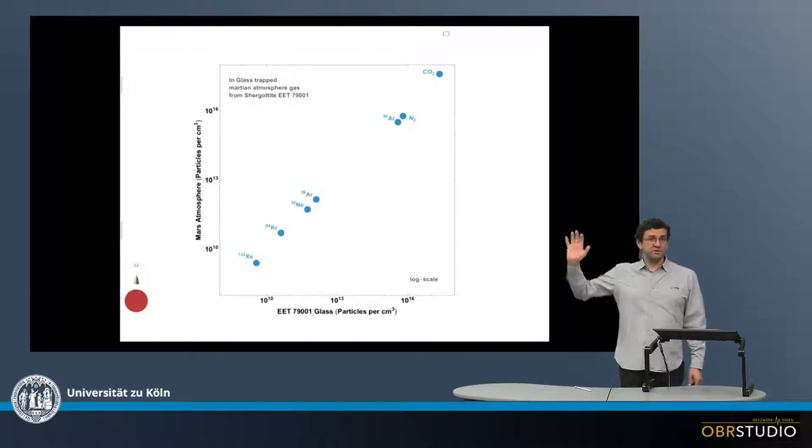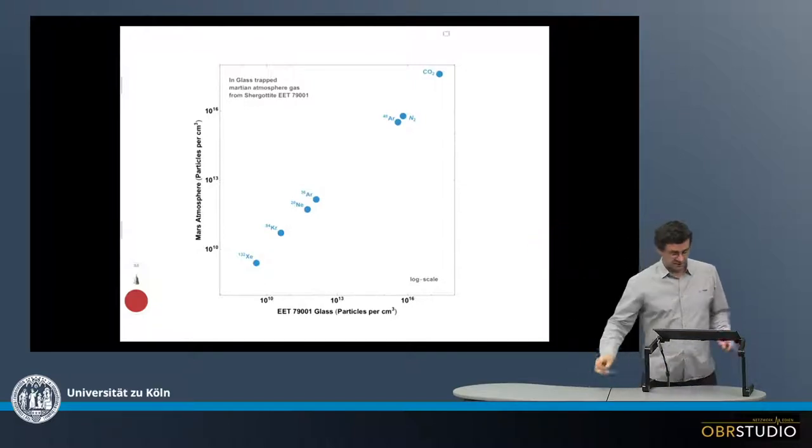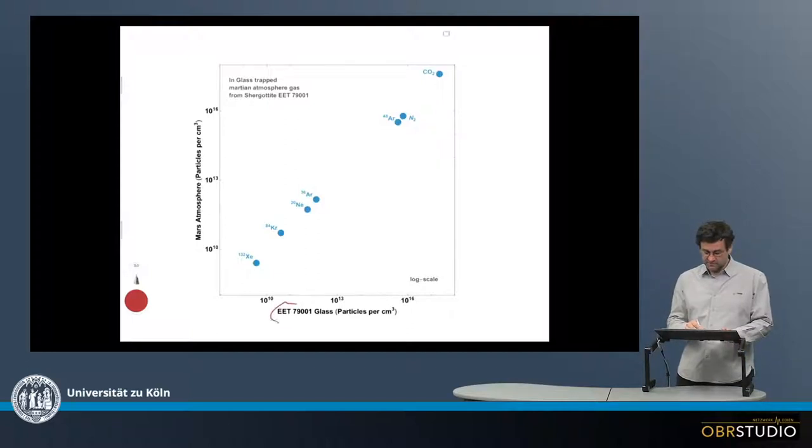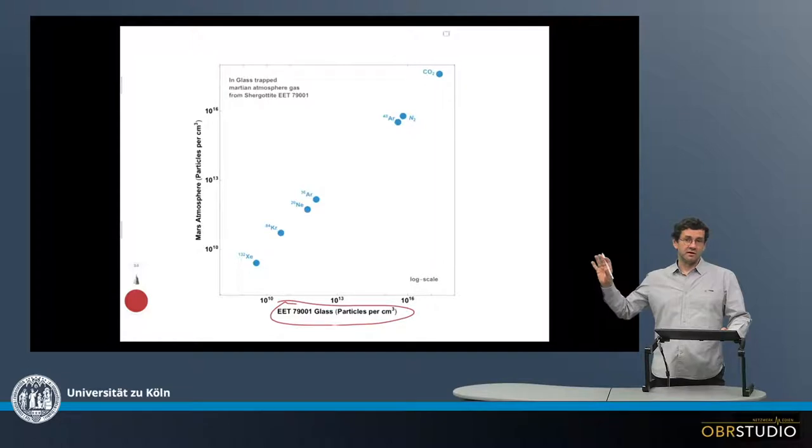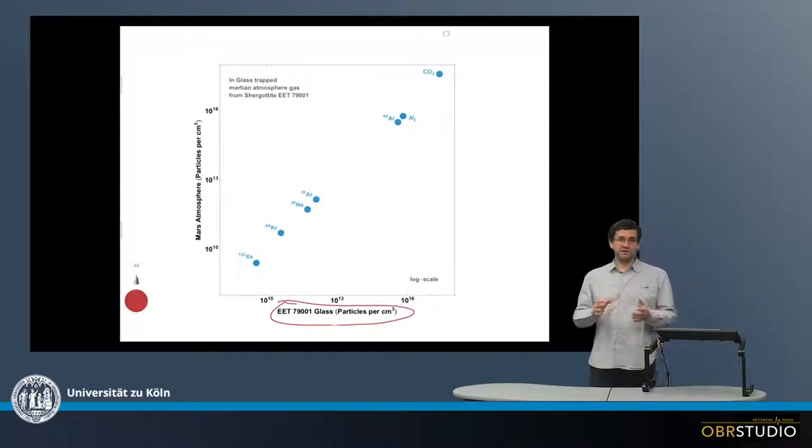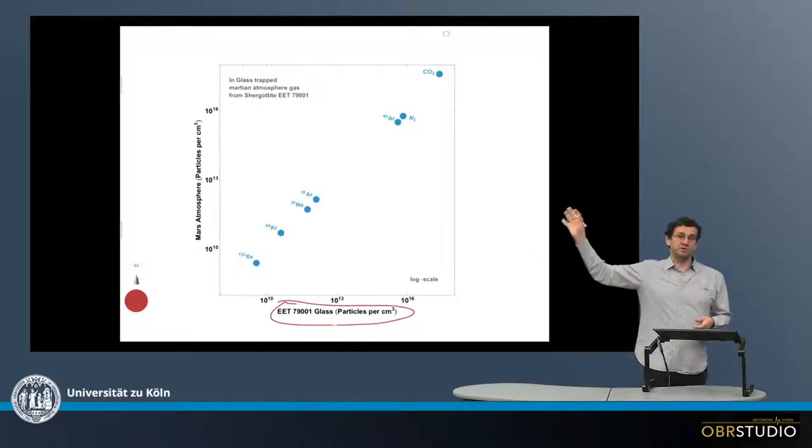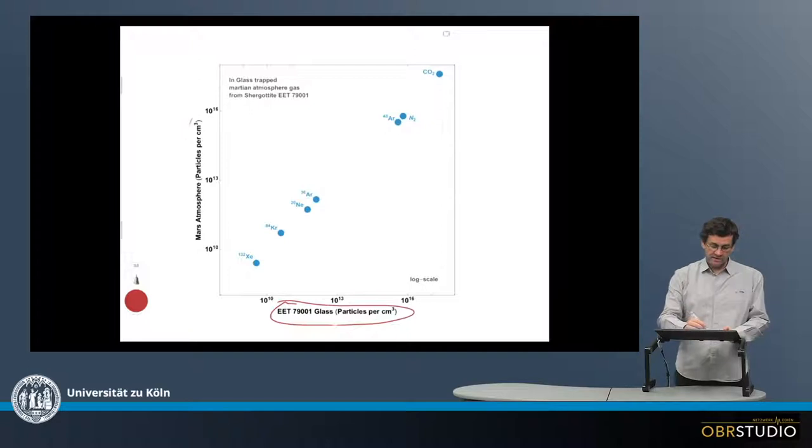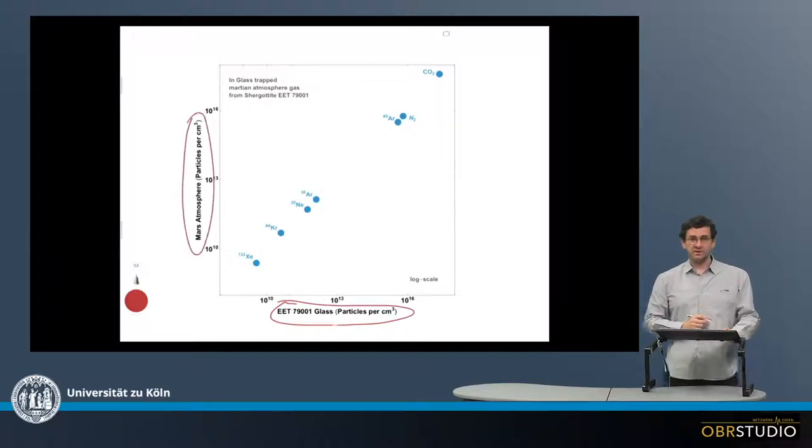And this is what is shown here on the x-axis of this diagram. So here on the x-axis is the concentration of various gases plotted. And then it's possible from spectroscopic observation to also measure the composition of the Martian atmosphere. And this is what's plotted here on the y-axis of this diagram, the Martian atmosphere.